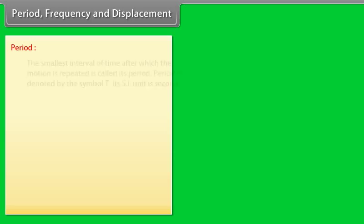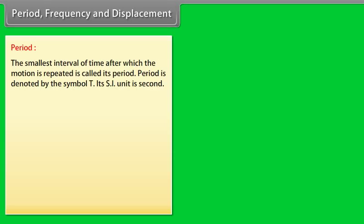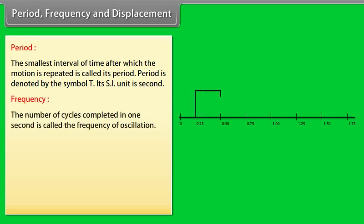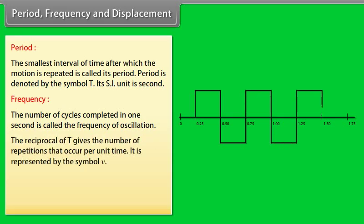Period: the smallest interval of time after which the motion is repeated is called its period. Period is denoted by the symbol T. Its SI unit is second. Frequency: the number of cycles completed in one second is called the frequency of oscillation. The reciprocal of T gives the number of repetitions per unit time. It is represented by the symbol ν. The relation between ν and T is ν = 1/T. The unit of ν is per second and is called Hertz.